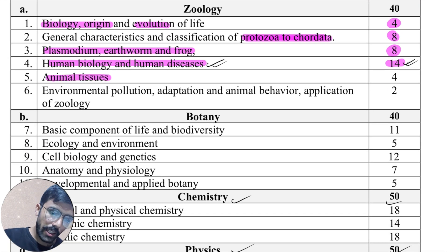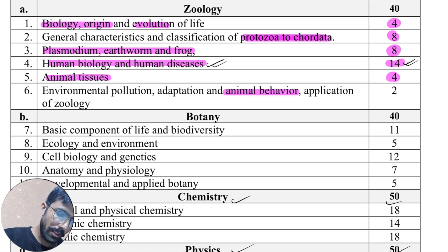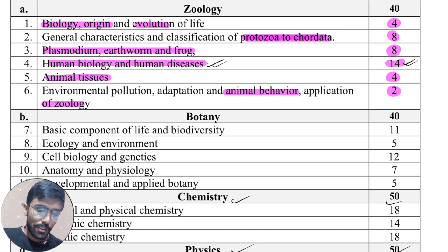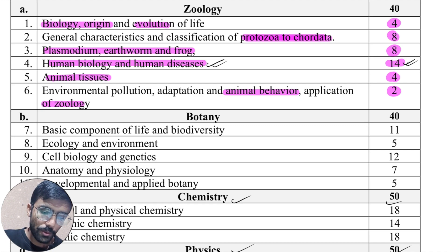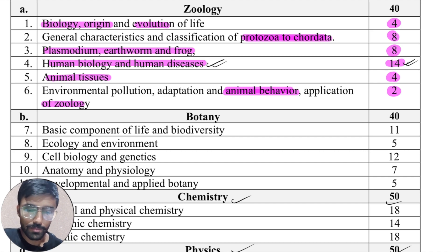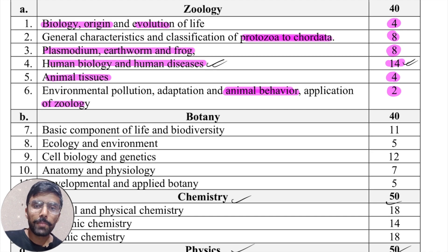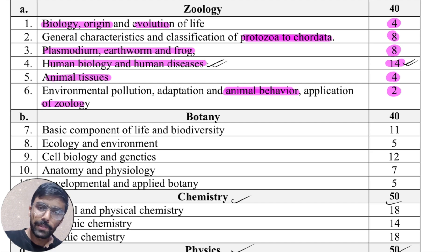From animal tissues it carries 4 marks. Environmental pollution, animal behavior, and application of zoology are going to carry 2 marks only. If you do not have time and have many things to cover in a shorter span, you can leave these chapters. But animal behavior alone sometimes carries 2 marks — previously when the entrance examination was 100 marks only, they had allocated 2 marks for animal behavior as well.